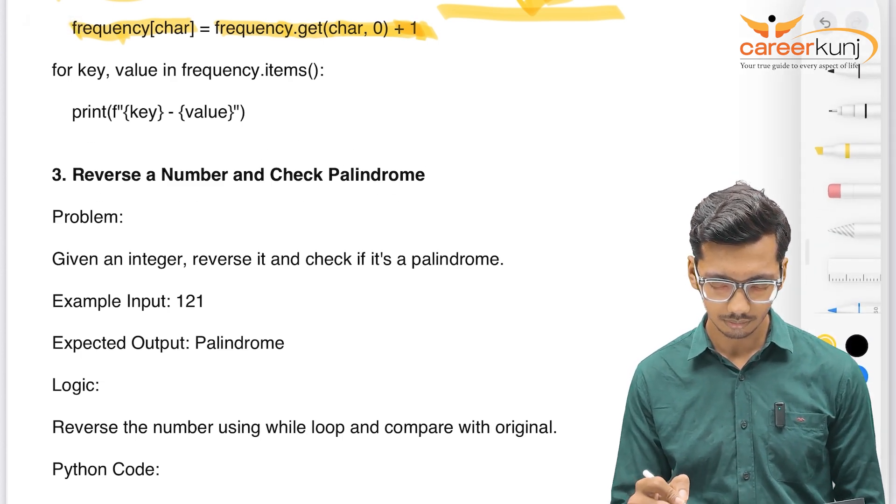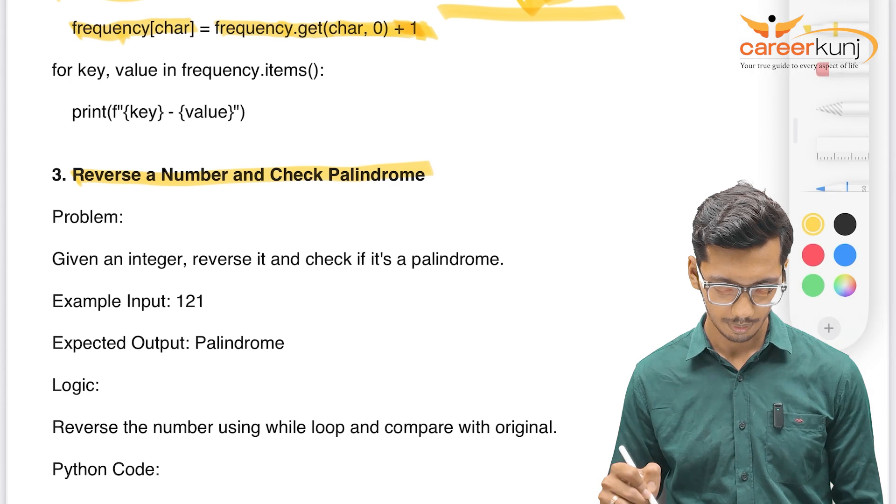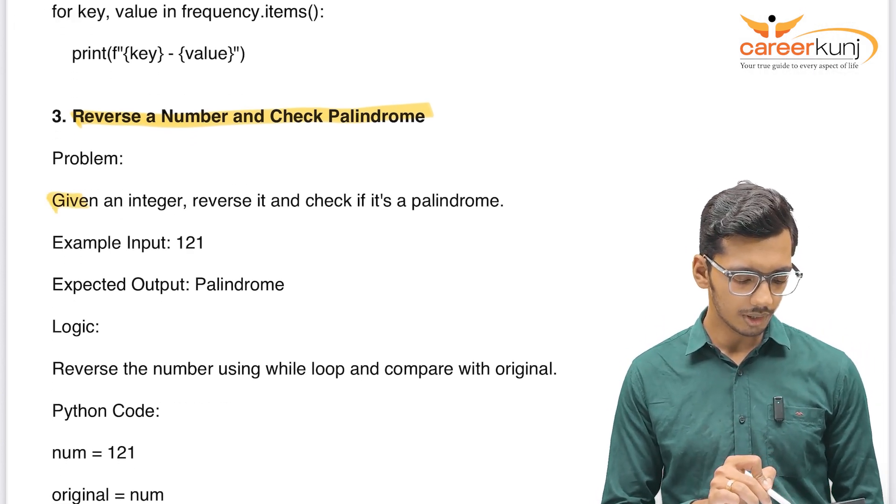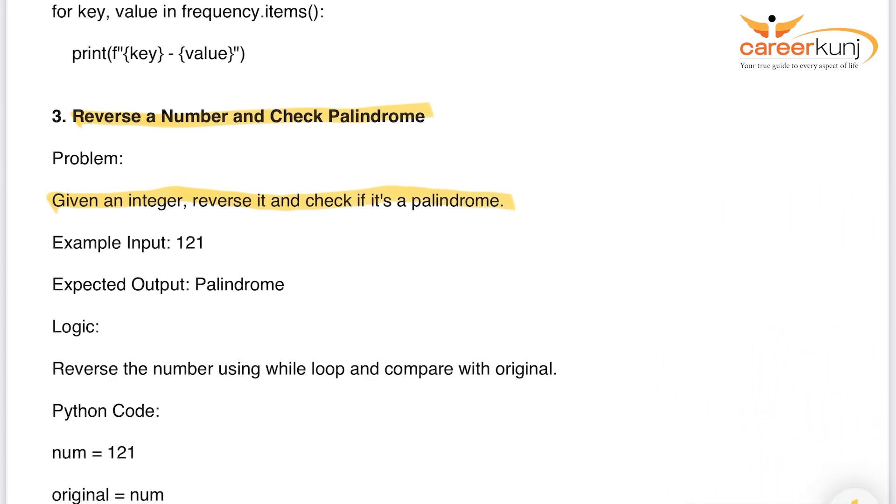The third question is to reverse the number and check for the palindrome. Let me give you the problem statement first. Given an integer, reverse it and check if it is a palindrome. So for example, if I have a number 1, 2, 1, it is a palindrome. Because if you read it this way or this way, it should be the same number. You might be thinking about some logic that, okay, I will take this string, reverse it, and so on. But we also have to take care of the exceptional cases or the hidden test cases. For example, if I pass a single digit number or if I pass 0, that time also, it shall be able to check.